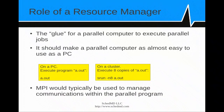You can think of a resource manager as the glue for a parallel computer to execute your parallel jobs. Ideally, it should make the parallel computer almost as easy to use as a PC. On a PC, to execute a program, you would just give it the program name and maybe some arguments. On a cluster running SLURM, it would look about the same, except you would have to tell it how many copies to run. MPI is typically used to manage the communications within the parallel program.